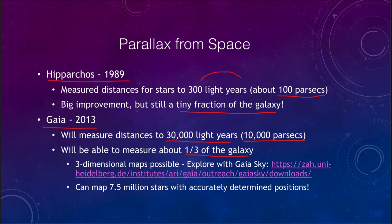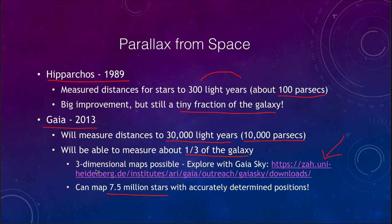Parallax is really the only direct measurement of distances that we have — the only way to directly determine distances to the stars — and it will be the base for using other methods to determine distances to other stars and distant galaxies. We need it to be as accurate as possible. Being able to get accurate maps for seven and a half million stars is a big jump from what could have been done just decades before. You can actually go to the Gaia Sky website and download software to create three-dimensional maps of the galaxy.